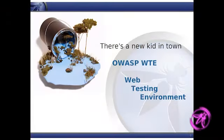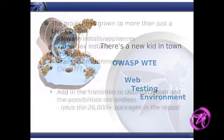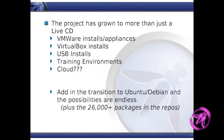When I decided the ISO and live CD thing wasn't fully working, I renamed it. I said I'm going to call it the Web Testing Environment because I'm doing more than live CDs — I'm doing ISOs, I'm doing VMs, and now I'm packaging individual tools. So now it's sort of this à la carte — what do you want — and we can create it because I've abstracted out all the pieces. I have VMware installs, VirtualBox installs. I created a USB install on an earlier version, but honestly it was so slow you wouldn't want to use it. I've used it for many training environments, and we're going to talk about the cloud.